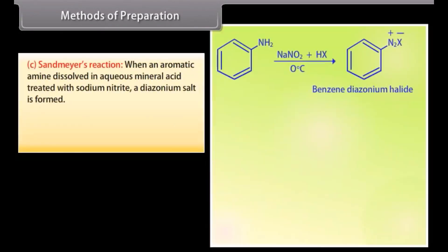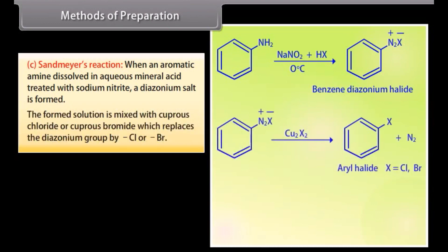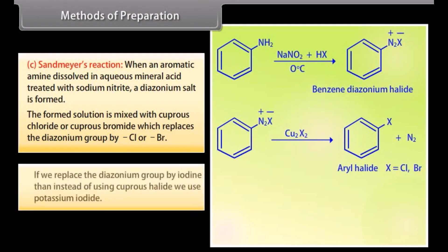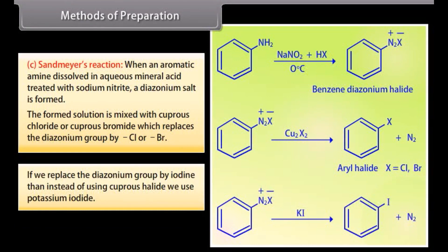Sandmeyer's reaction: When an aromatic amine dissolved in aqueous mineral acid is treated with sodium nitrate, a diazonium salt is formed. The formed solution is mixed with cuprous chloride or cuprous bromide, which replaces the diazonium group by Cl or Br. To replace the diazonium group with iodine, instead of cuprous halide, potassium iodide is used.